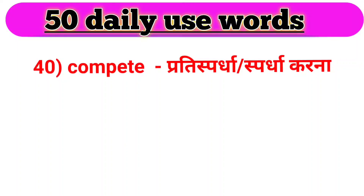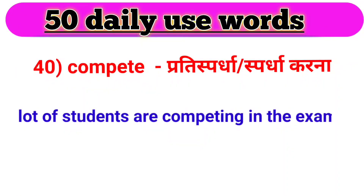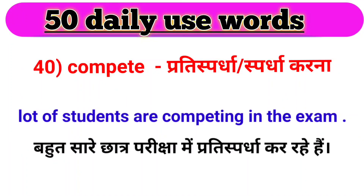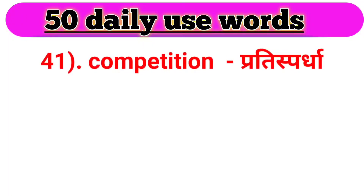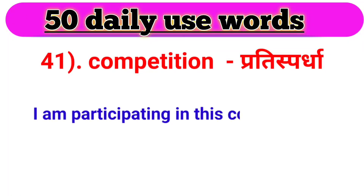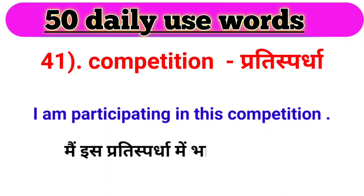Next word, we have compete. Compete ka matlab hota hai pratispardha karna. For example: A lot of students are competing in the exam. Bahut saare chhatra pariksha mein pratispardha kar rahe hain. Next word, we have competition. Competition ka matlab hota hai pratispardha. For example: I am participating in this competition. Main is pratispardha mein bhaag le raha hoon.